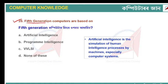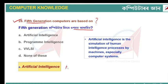Fifth generation computers are based on what? The answer is artificial intelligence, or AI. Fifth generation computers use artificial intelligence to perform tasks — things we can see and understand. Artificial intelligence essentially replicates human intelligence.